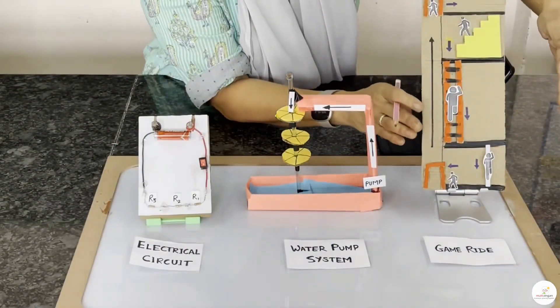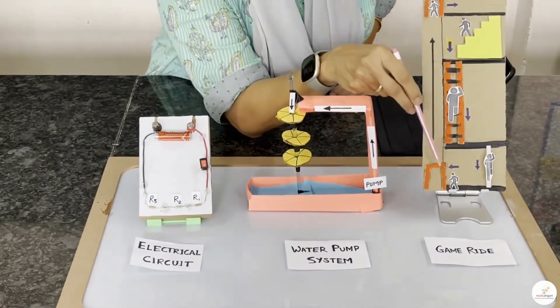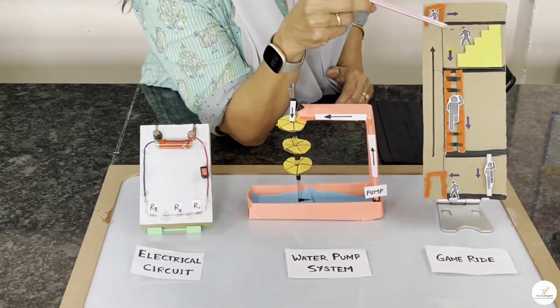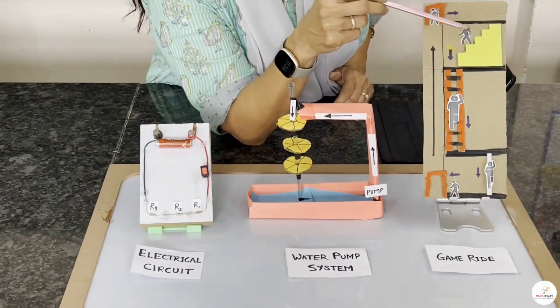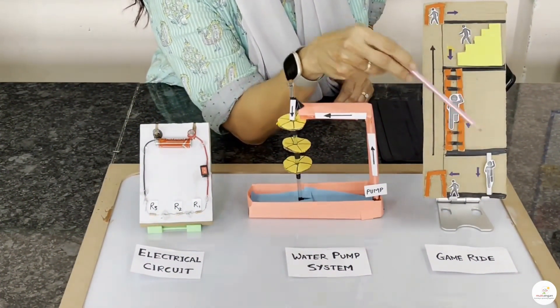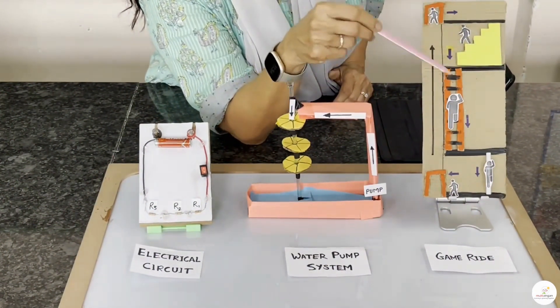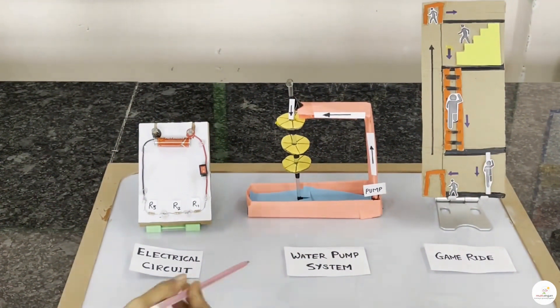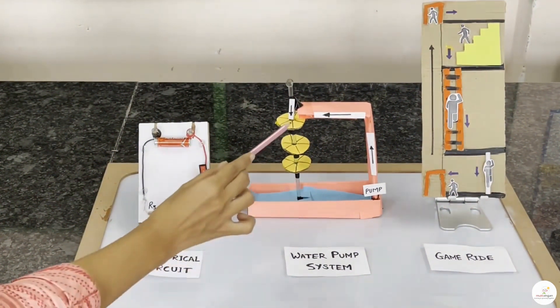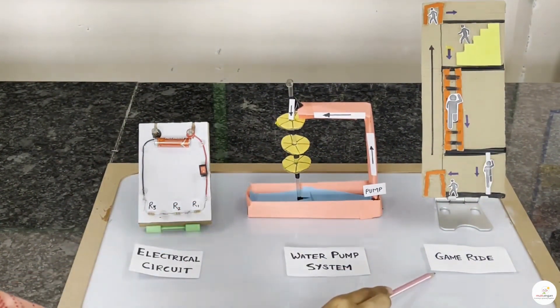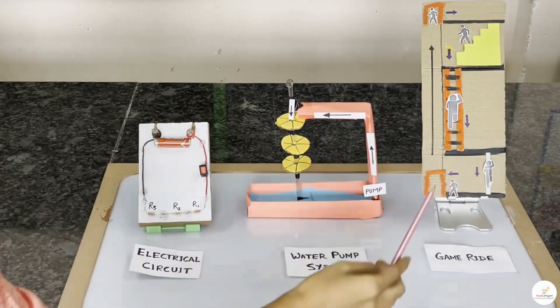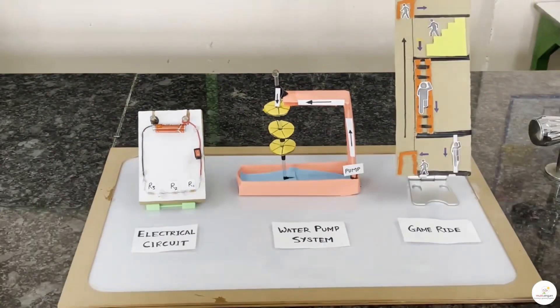And finally, it flows down to the bottom. So, let's call these wheels W1, W2 and W3. The third model is a game ride. It has one elevator. As you can see, people can use it to go up to the top. But to come down, they have to go through the staircase, the ladder and through the pole. And all these three are located at a different level. So, what do you think? Is there any similarity between these three models?